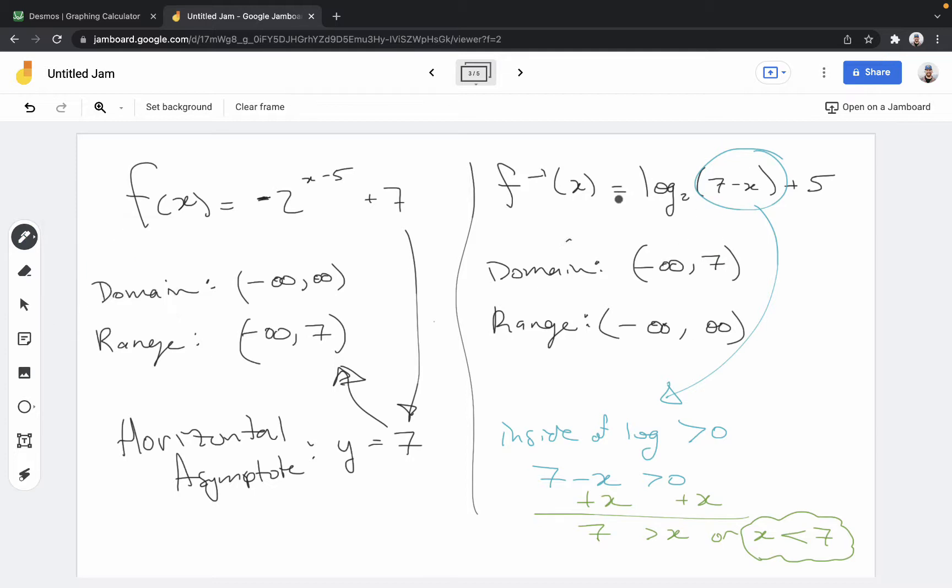Now, the log will spit out any number, so that's the range. And that's just flipping the domain to become the range.